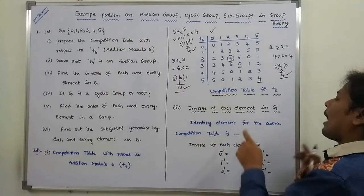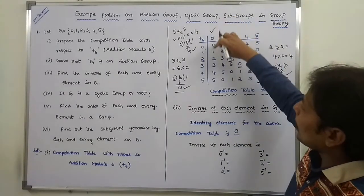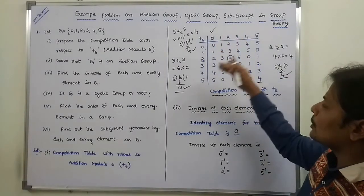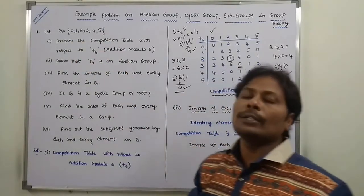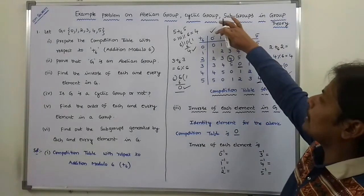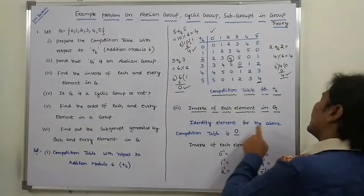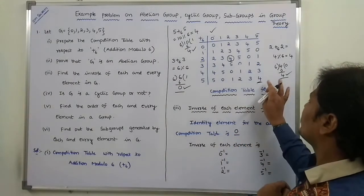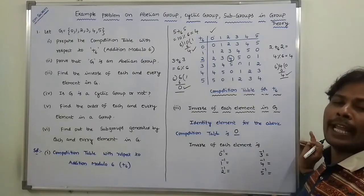The identity element for the above composition table is 0. Under column number 0, the elements are in order 0,1,2,3,4,5, same as the given group G. Both are in the same order, so this column number can be treated as the identity element for the given group G. Now observe each and every row at which place the identity element appears.